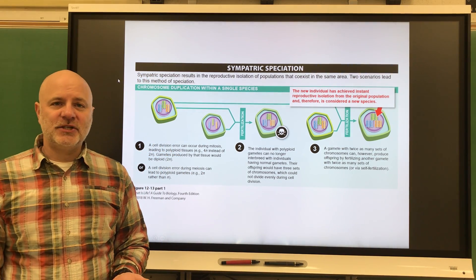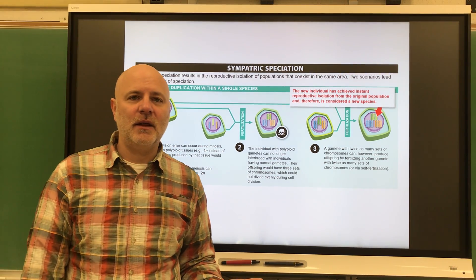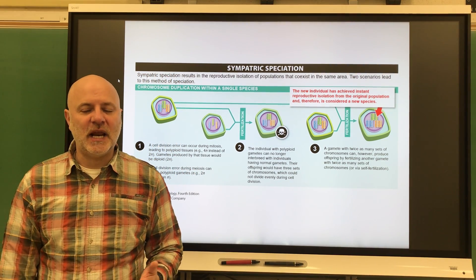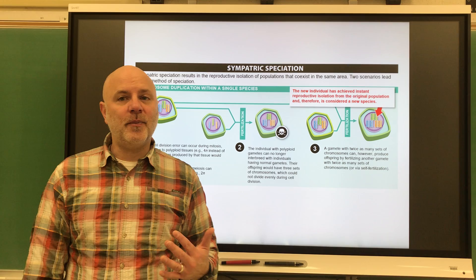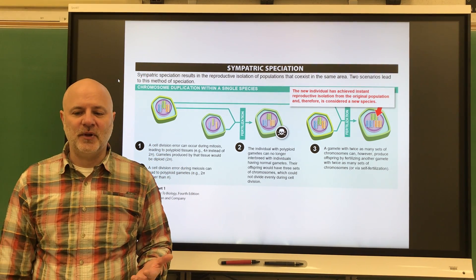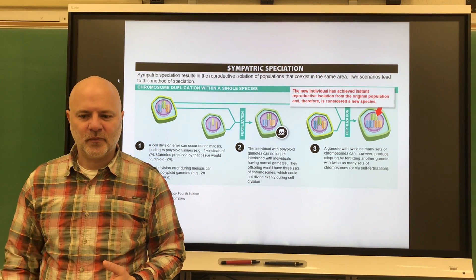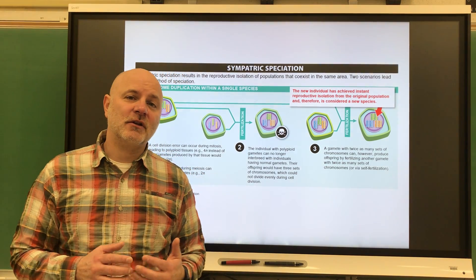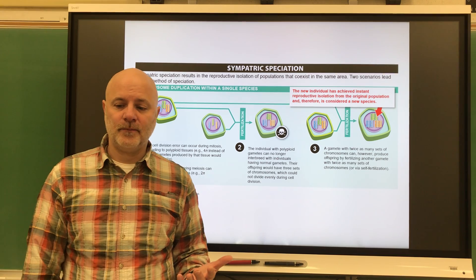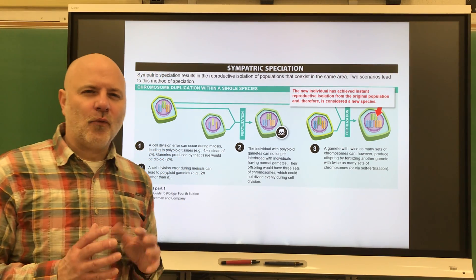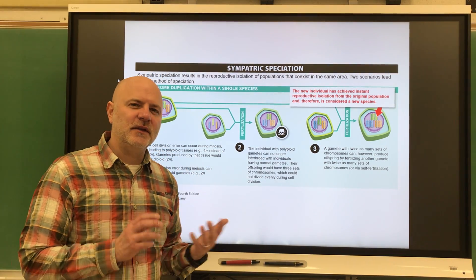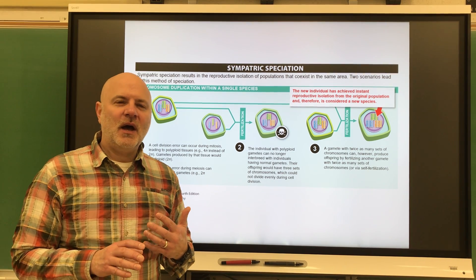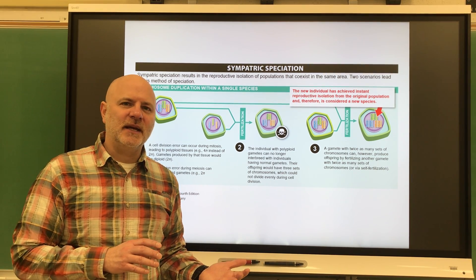Next is sympatric speciation. This is a formation of a new species as a result of a genetic change that produces a reproductive barrier between the changed population and a parental population. Sympatric speciation is speciation that occurs without a geographic barrier. This is kind of rare in animals because these mutations that occur usually the animals don't survive, but it is common in plants.